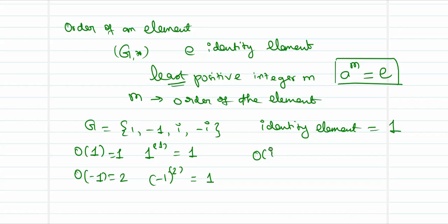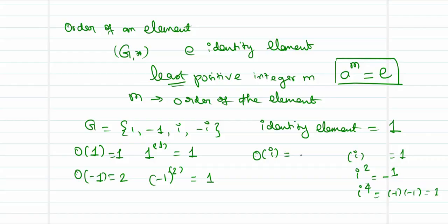What will be the order of i? I know that i² = -1, so I need i to the power of 4 to get (-1)×(-1) = 1. So the order of the element i is equal to 4 — when i is raised 4 times, I get the value 1.